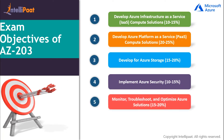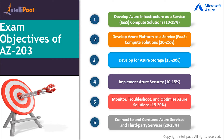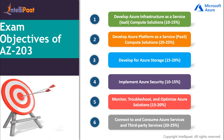The fifth module is Monitoring, Troubleshooting, and Optimizing Azure Solutions, holding a weightage of 15 to 20 percent in the exam. Topics covered include instrumenting solutions to support monitoring and logging, integrating caching and content delivery with solutions, and developing code to support scalability of apps and services. The sixth and last module is Connect to and Consume Azure Services and Third-Party Services, holding a weightage of 20 to 25 percent, covering establishing API gateways, integrating Azure Search within solutions, and developing an App Service Logic App.